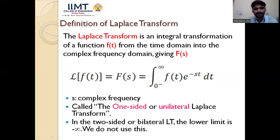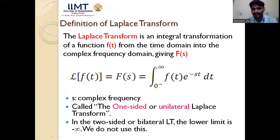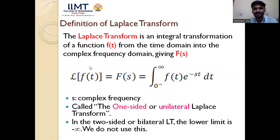Here s is the complex frequency. When we integrate from 0 to infinity, taking only the positive side of time, this is known as the one-sided or unilateral Laplace transform. If we integrate from minus infinity to plus infinity — taking both negative and positive time values — it is known as the bilateral or two-sided Laplace transform.